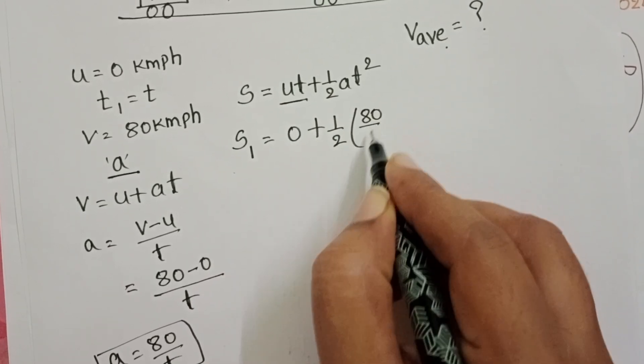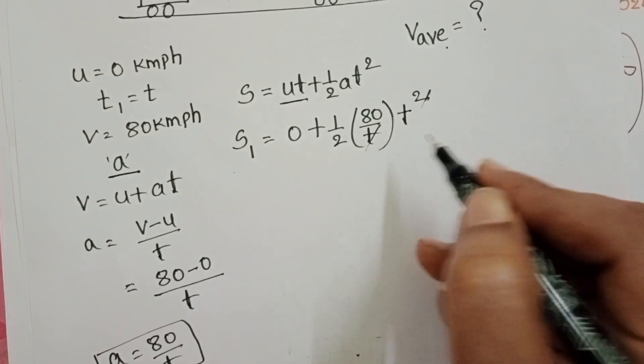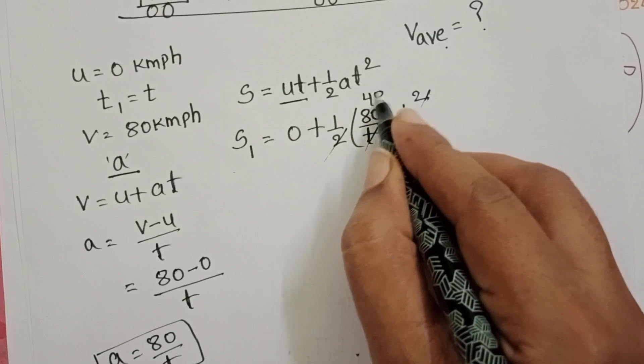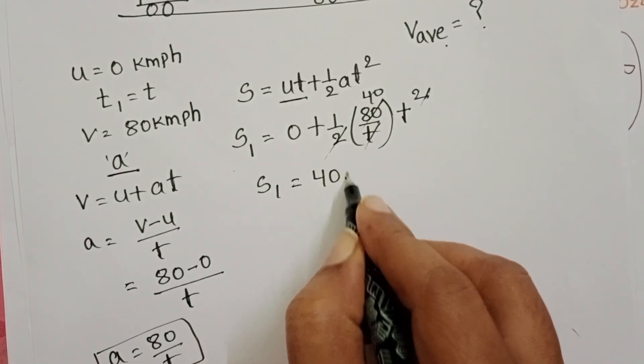And given time T, T square. 1T get cancelled. 2 1s, 2 40s. S1 is equals to 40T.